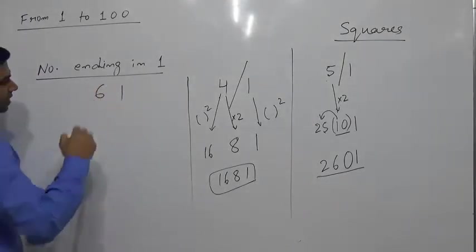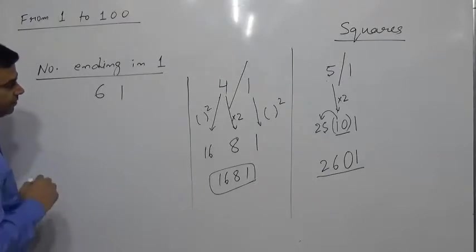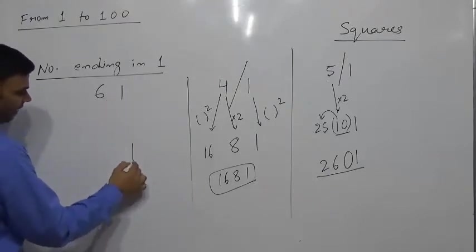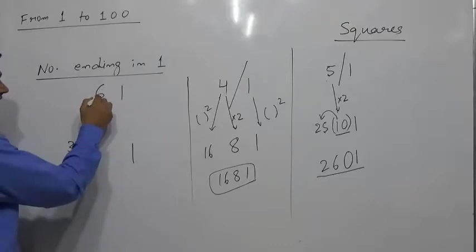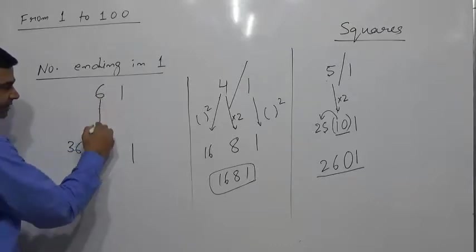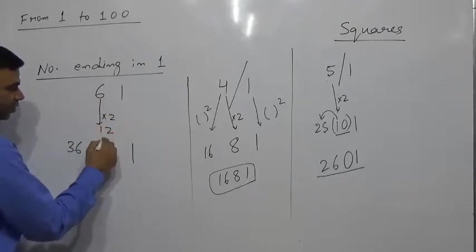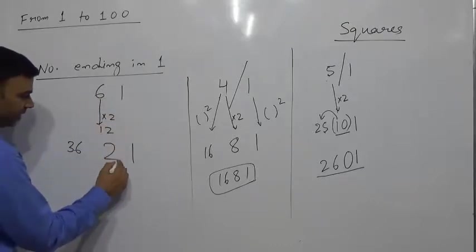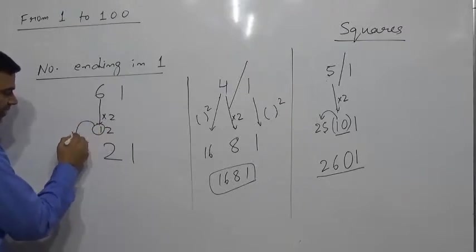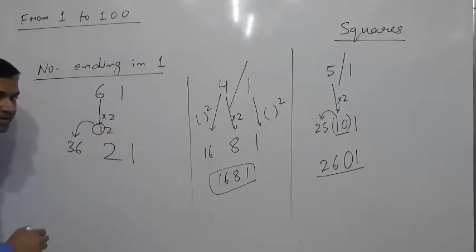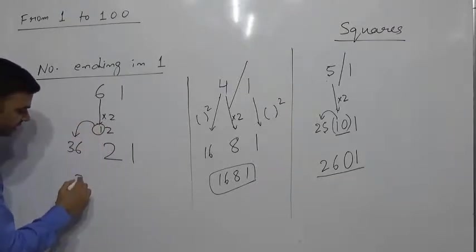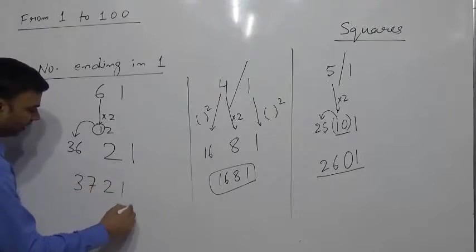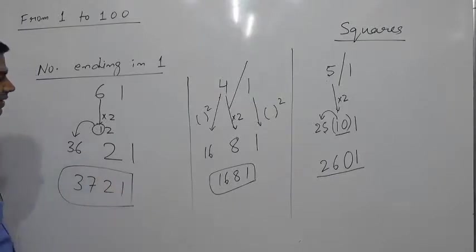Let us take 61. For 1 we have 1; for 6 we have 36; and 6 × 2 = 12. So 2 comes in the middle and 1 carries forward to 36, giving 37. The square of 61 is 3721.